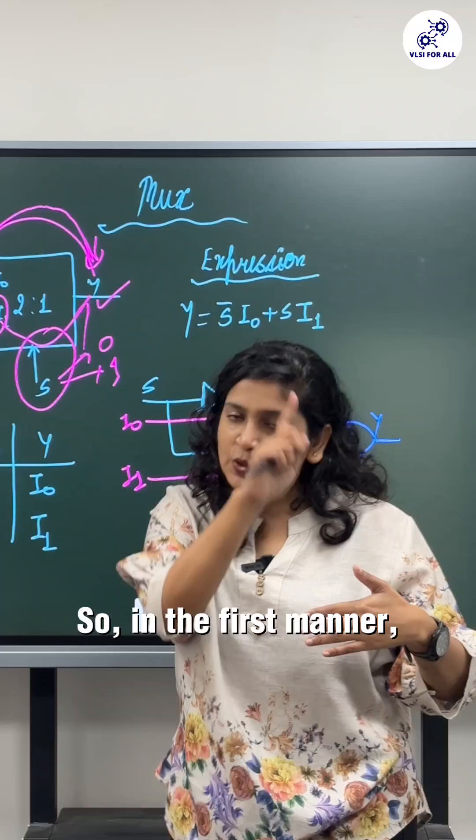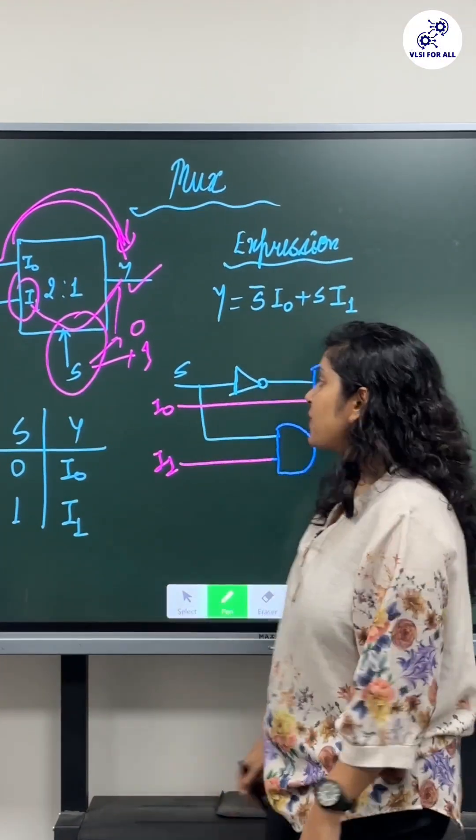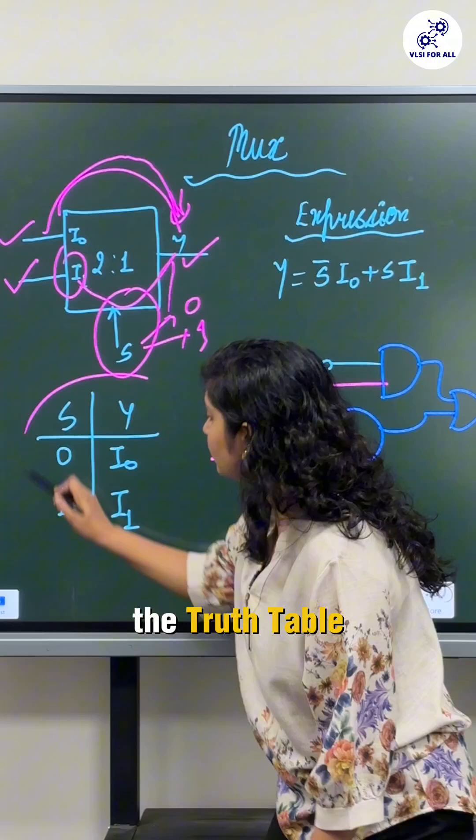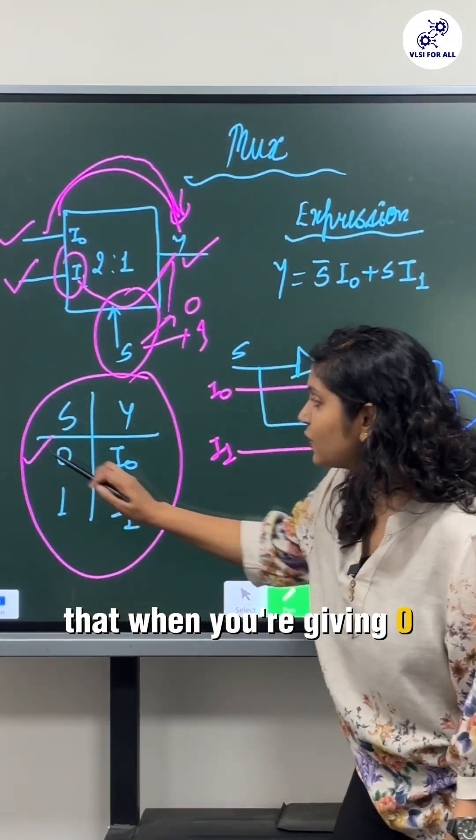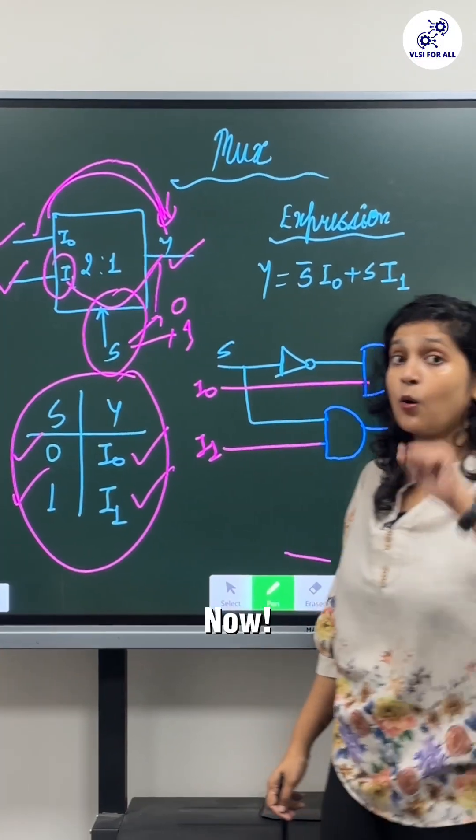In the first manner it will pass I0, in the second manner it will pass I1. So how you will understand the truth table? From here you can see that when you are giving zero it is passing I0, when you are giving one it is passing I1.